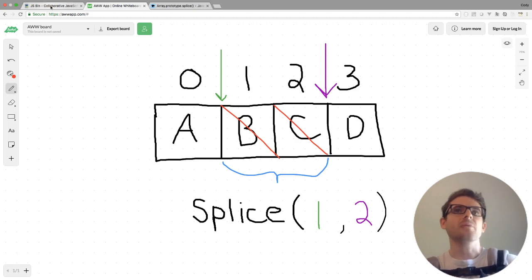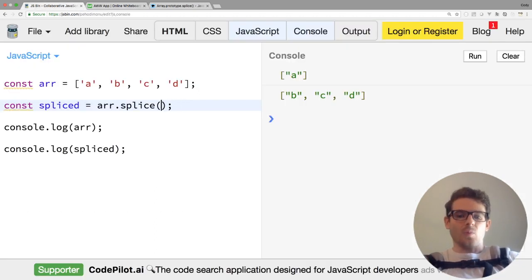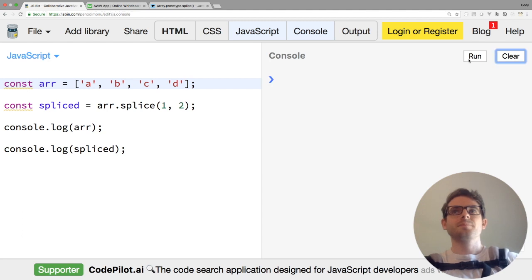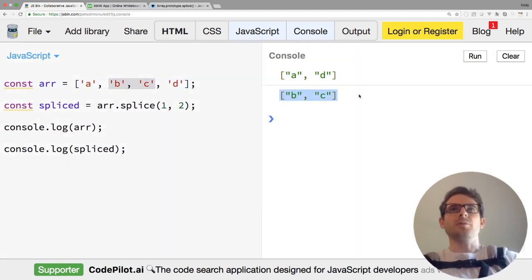So let's go back to JSBin and try that out. So change this to one comma two. And we get back A and D. So if you notice here, it did remove B and C. And we got those back in our return statement.